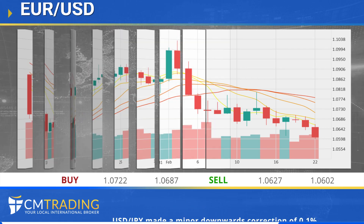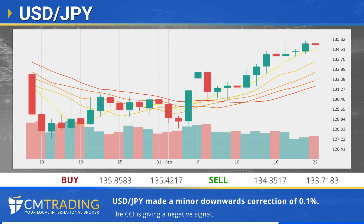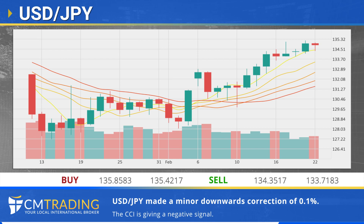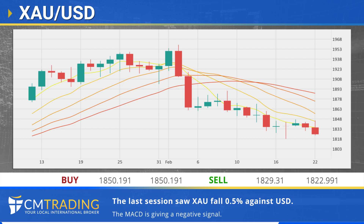The dollar dipped a slight 0.1 percent against the yen in the last session. The CCI is giving a negative signal, going against our overall technical analysis. The last session saw gold drop 0.5 percent against the dollar.